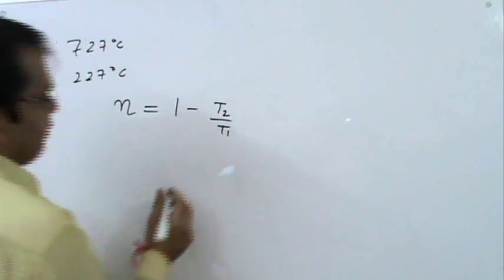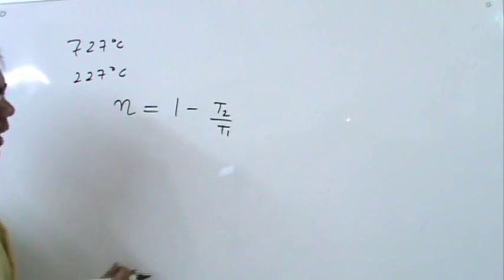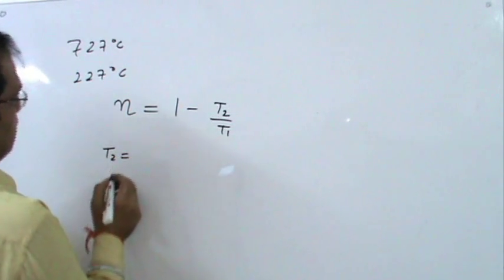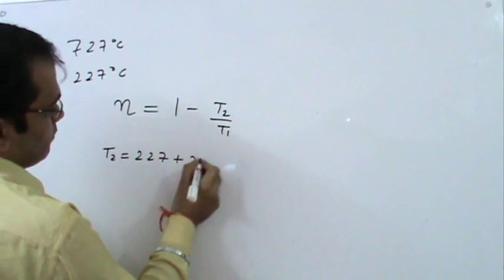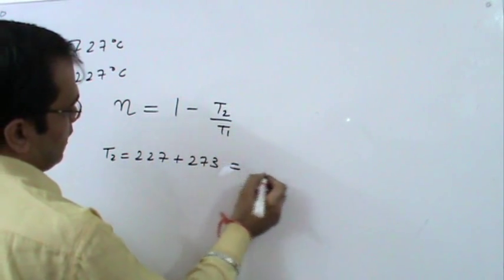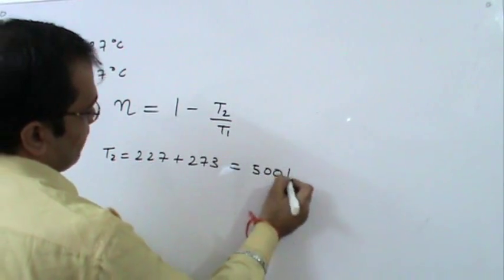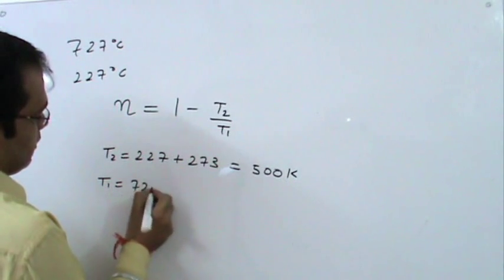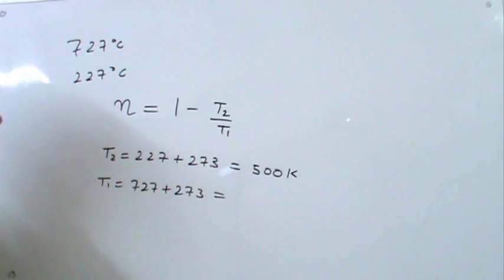Where T2 is the temperature in Kelvin of the sink and T1 is the temperature in Kelvin of the source. So we have T2 in this case is equal to 227 plus 273, that is 500 Kelvin, and T1 is equal to 727 plus 273, that is 1000 Kelvin.